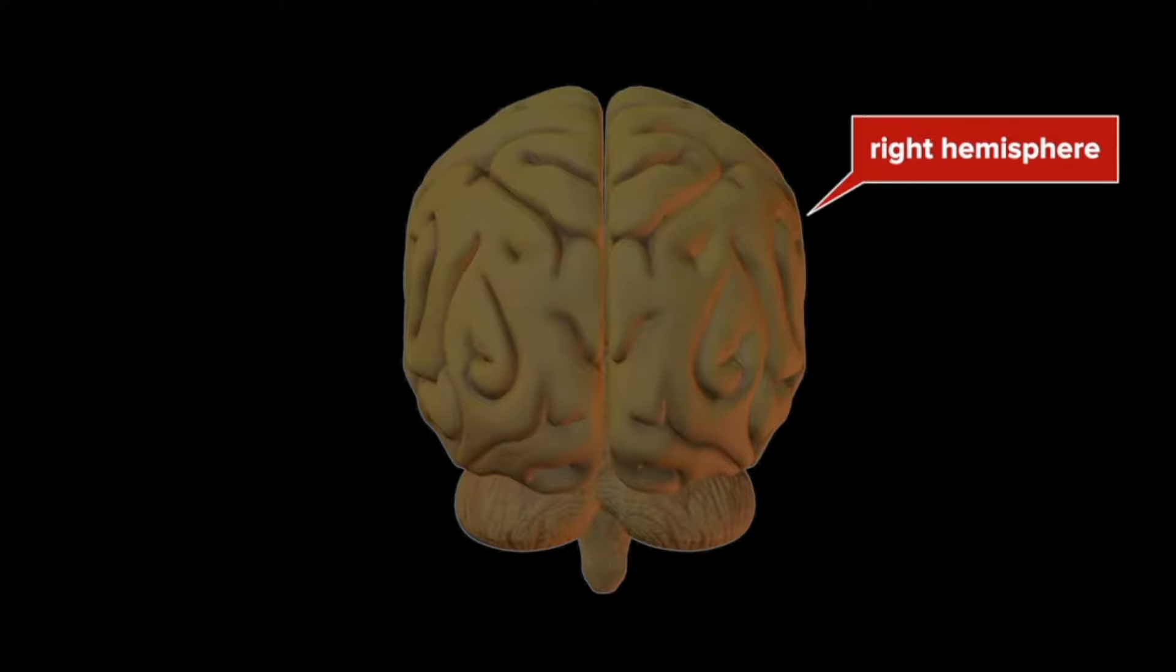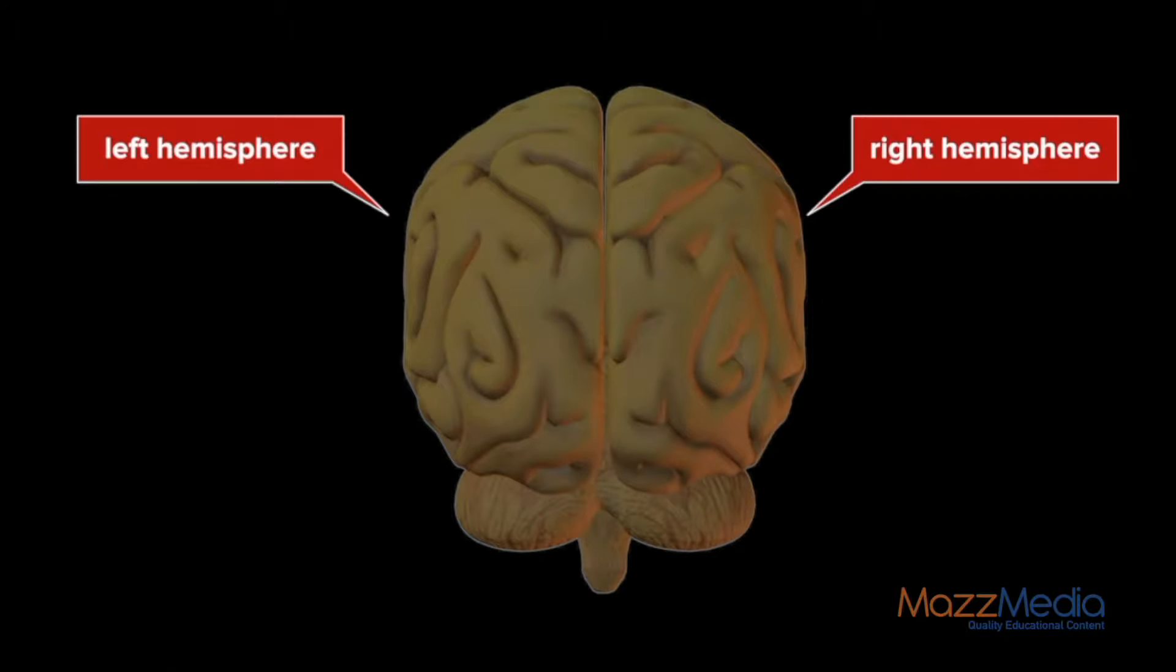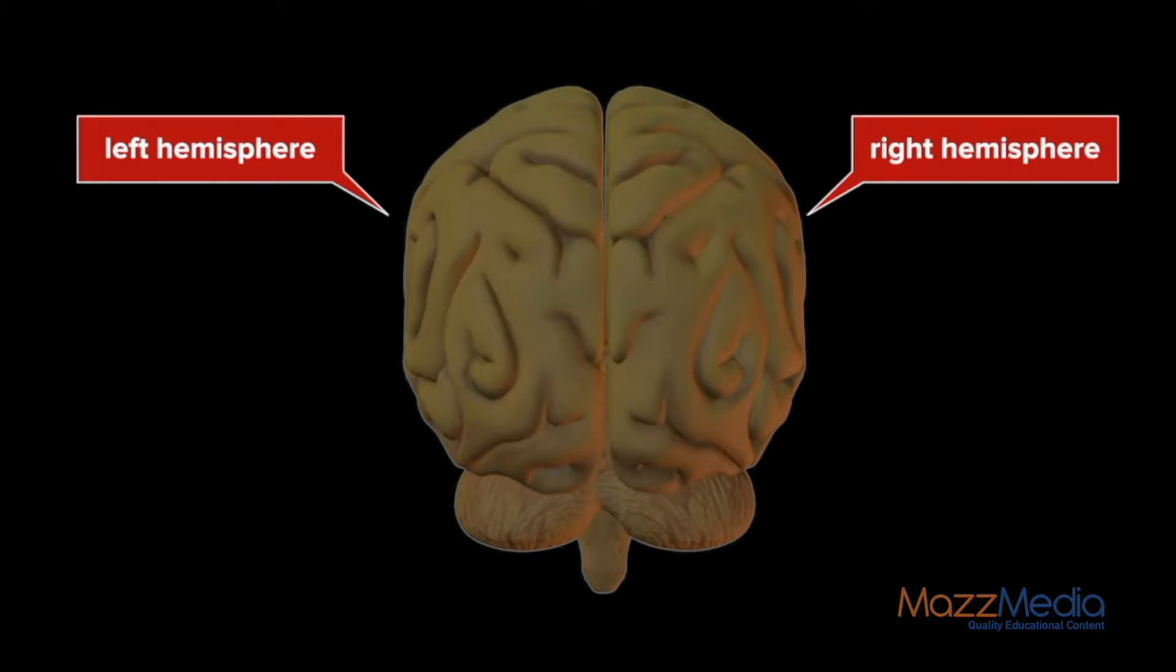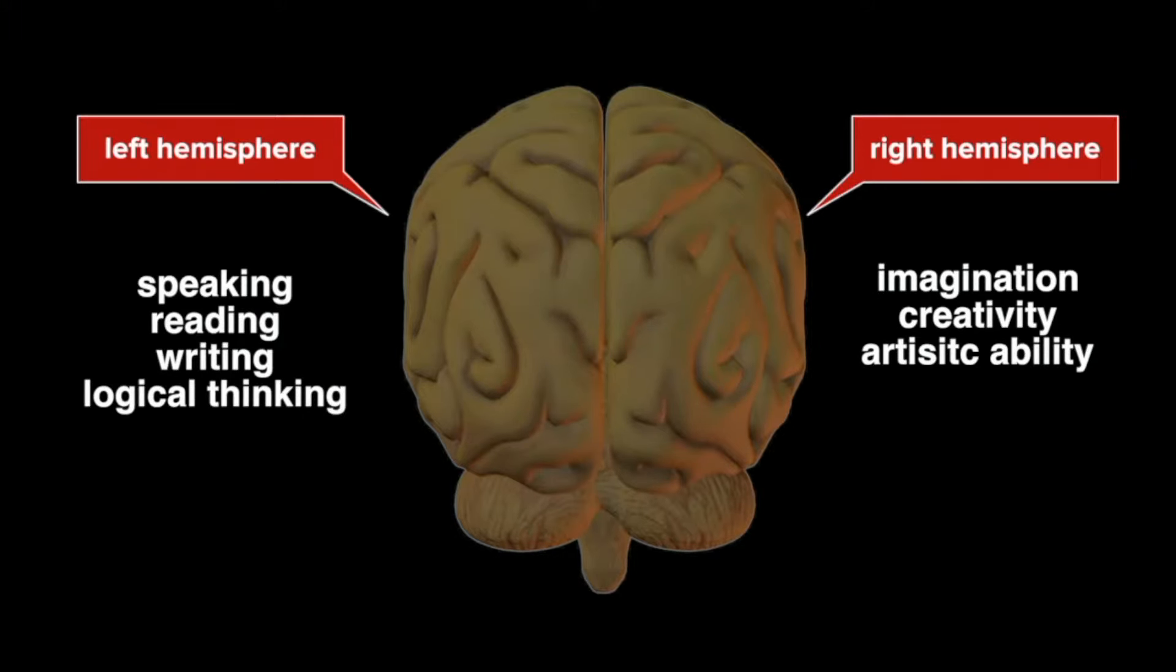The cerebrum is divided into a right and left half, which are also called hemispheres. The right hemisphere of the cerebrum controls the left side of the body, while the left hemisphere controls the right side of the body. Each half of the cerebrum also controls different kinds of mental activity. The right half of the cerebrum primarily controls activities that involve imagination, creativity, and artistic ability. The left half is associated with speaking, reading, writing, and logical thinking.